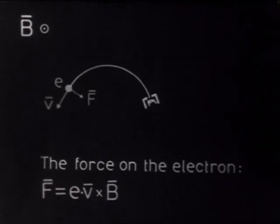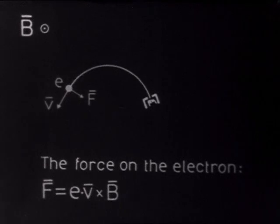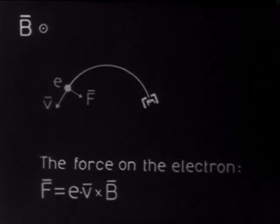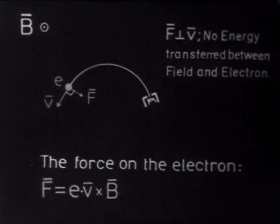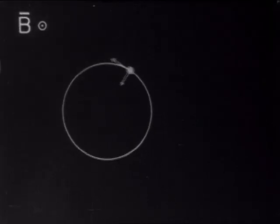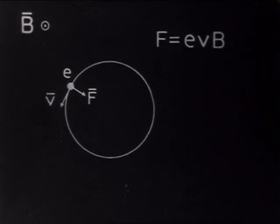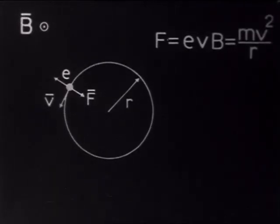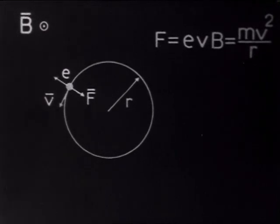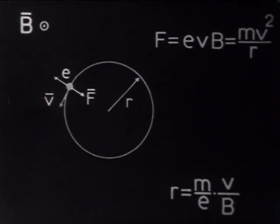This homogeneous magnetic field is directed towards the spectator. An electron in motion is influenced by the field with a force perpendicular to the moving direction of the electron as well as to the field direction. As the force is perpendicular to the direction of motion, there is no transfer of energy and the electron moves in a circular path. The balance condition means that the field influence on the electron is equal to the centrifugal force. This gives the expression for the radius of the circle.